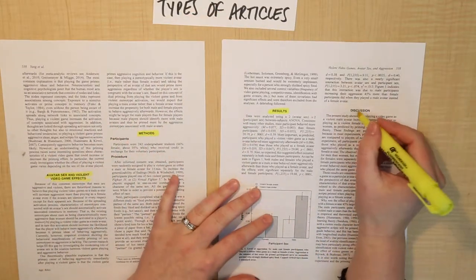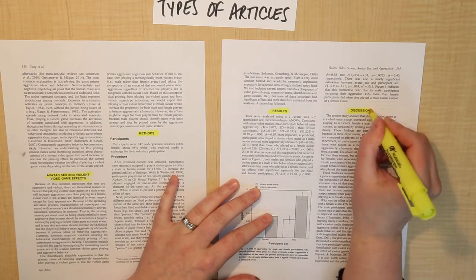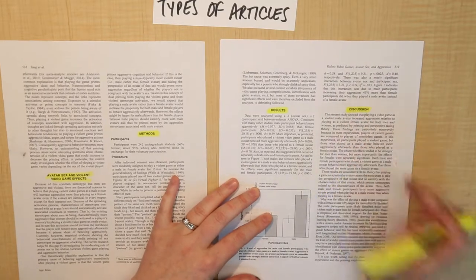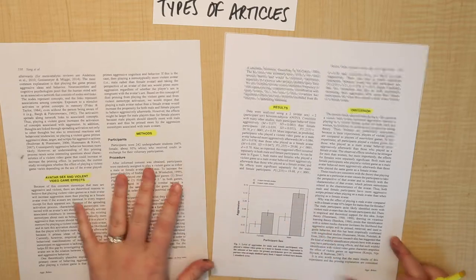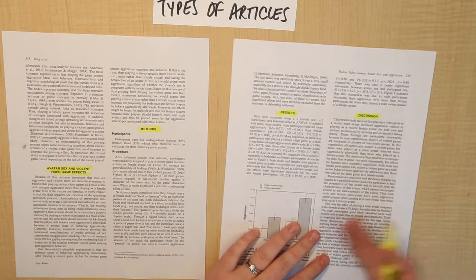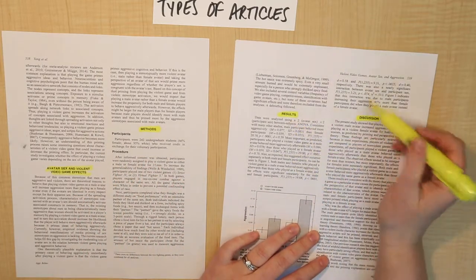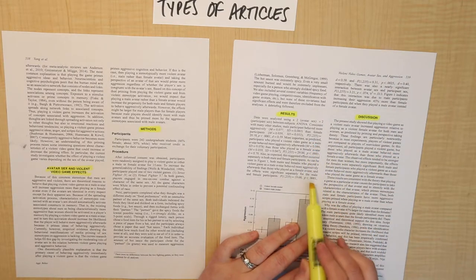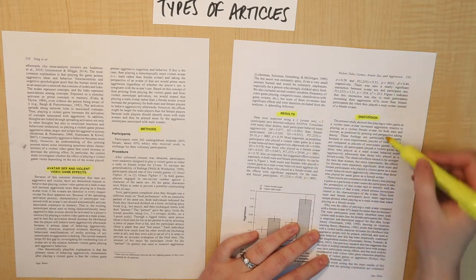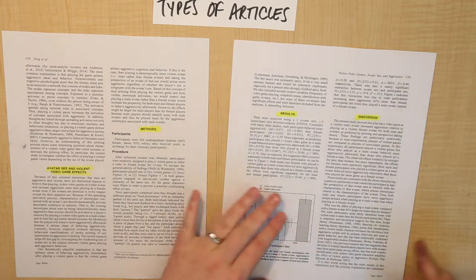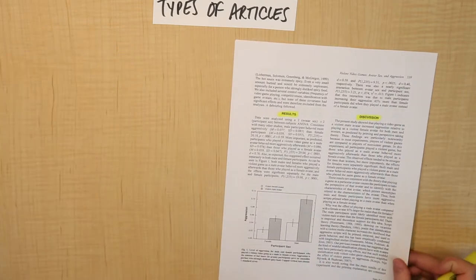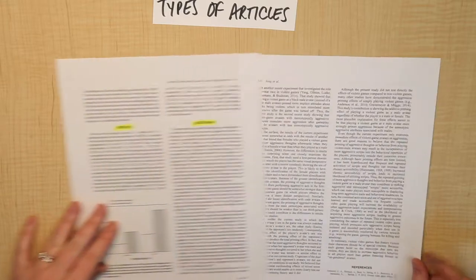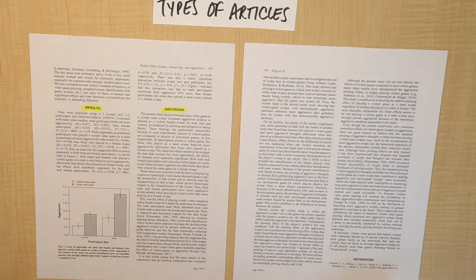And then we end up with a section called Discussion. And in this section, what they do is they'll talk about the results that they got. So in the Results section, they just list what they were. You can see here they're using a lot of figures, numbers, and data. In the discussion, they kind of interpret those results and give you more information about why they matter and what conclusions they're drawing from it.